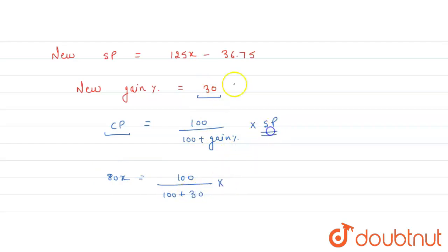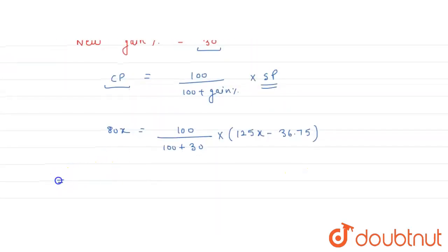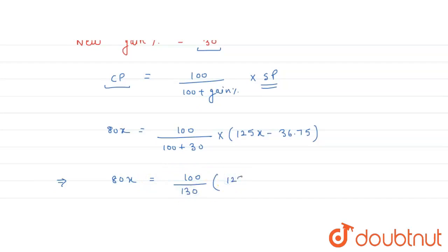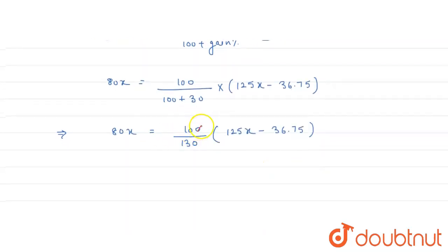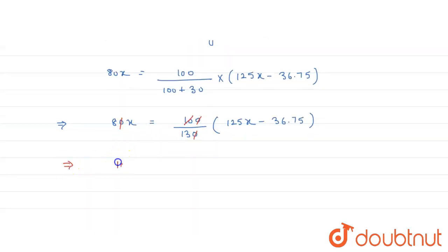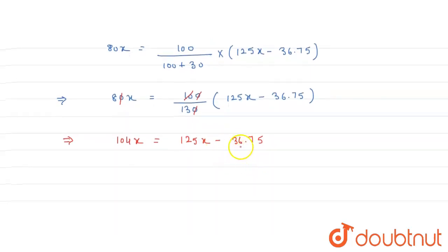SP is 125x minus 36.75. Now simplify. So 80x is equal to 100 upon 130, multiplied by 125x minus 36.75. Now cancel out 10 and 10. Cross multiply: 80 times 13 is 104x, and this is equal to 125x minus 36.75.